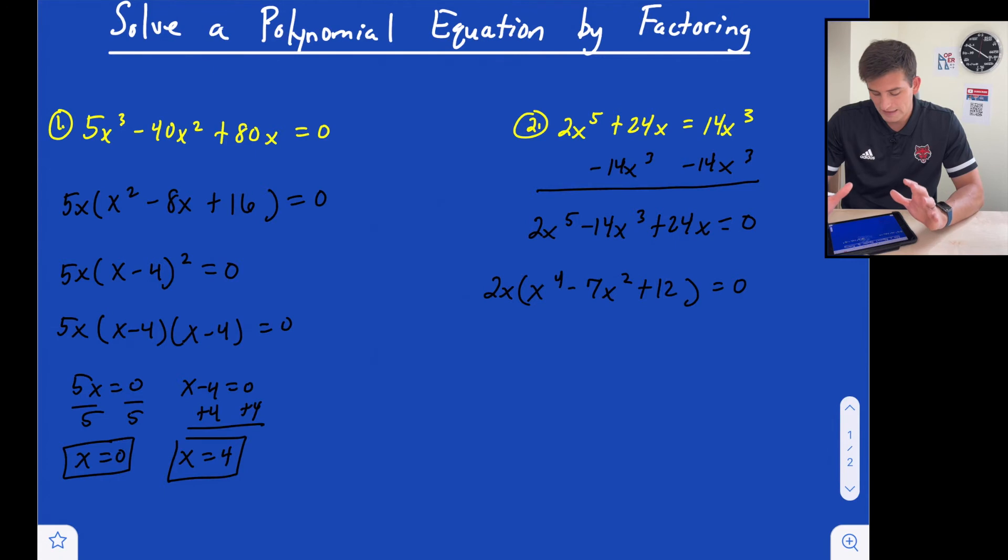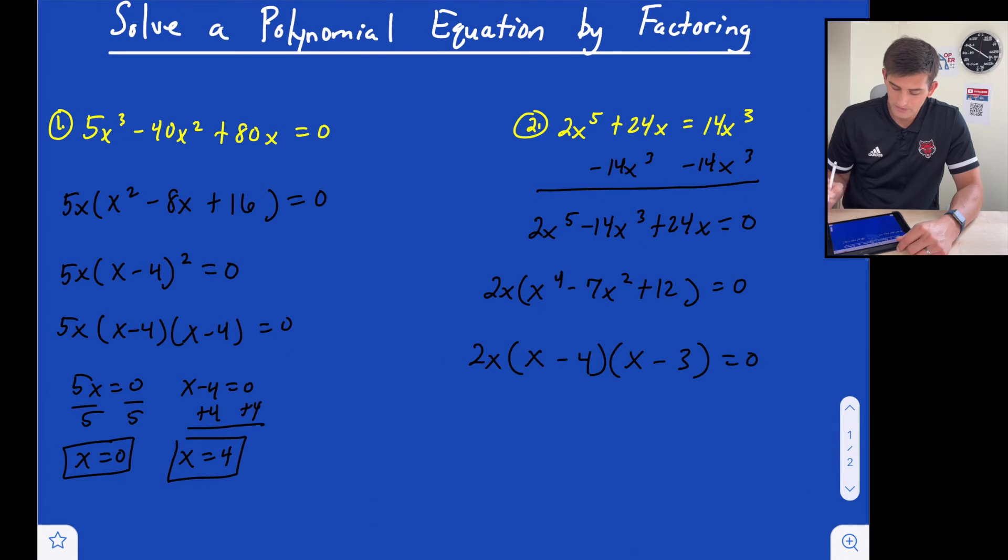So if we look at x to the fourth, let's just think about that as x squared minus 7x plus 12. So we would think, okay, what two numbers add to negative 7 and multiply to positive 14? Well that would be a negative 4, so x minus 4, and a negative 3.